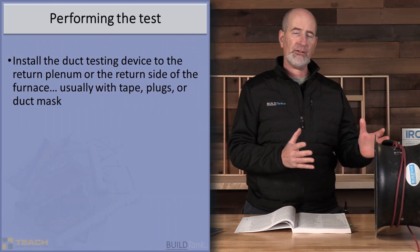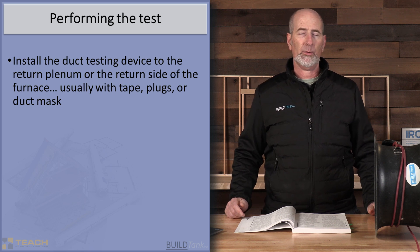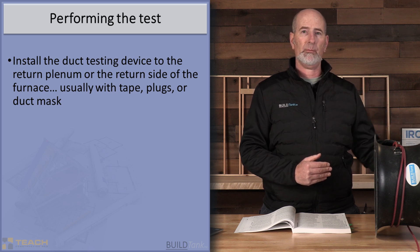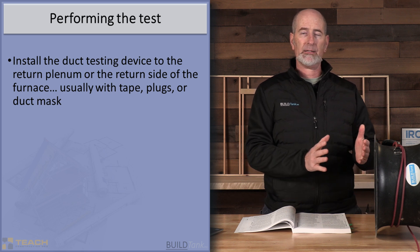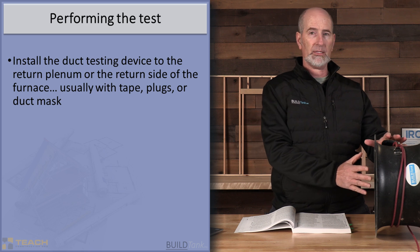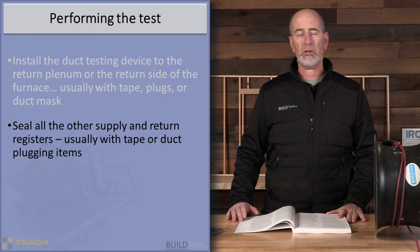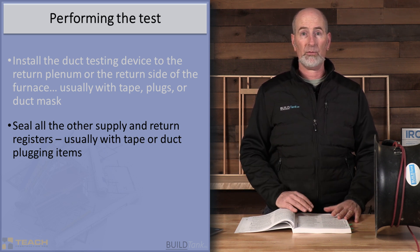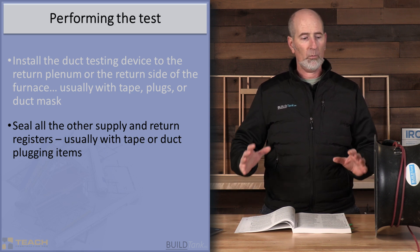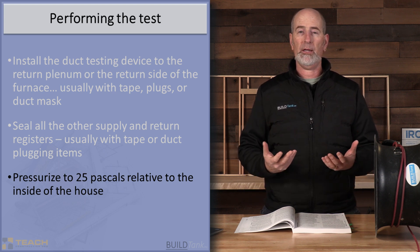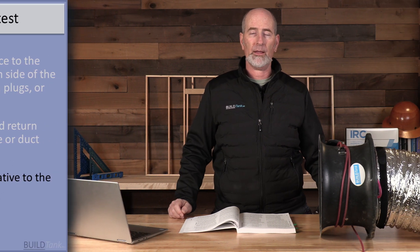When we're doing this total duct leakage test, we put a duct testing device like this one and attach it to the return side of the duct system. The return side can be either at a large enough return that has access to the furnace cabinet — where the furnace blower is located — or it can be connected directly at the furnace cabinet at the blower chamber itself. Once connected, we then go around the house and block off all the supply and return openings, taping them off at the surface where they penetrate through the drywall or subfloor, sealing off at that location.